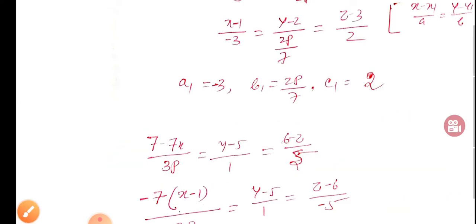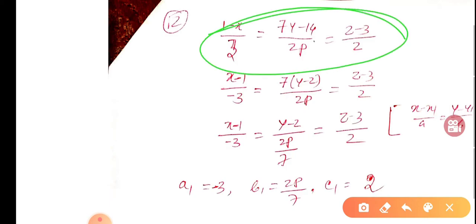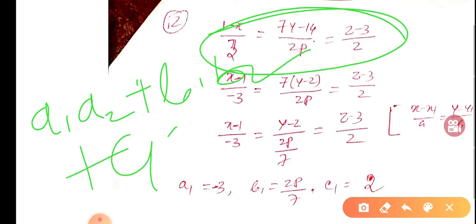These two lines are given. Now the two lines are perpendicular, so a1a2 + b1b2 + c1c2 equals zero. This will be zero.